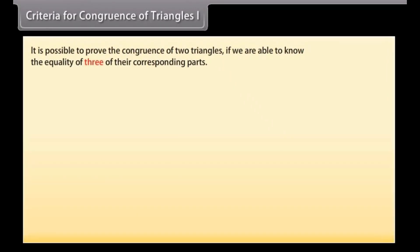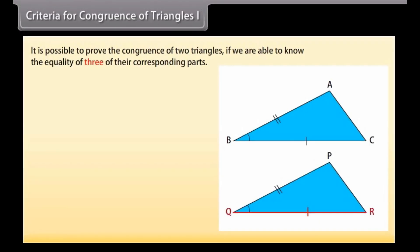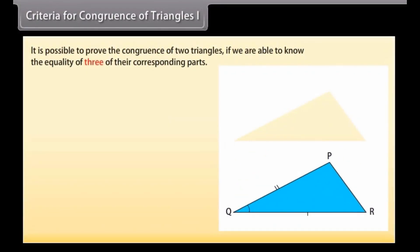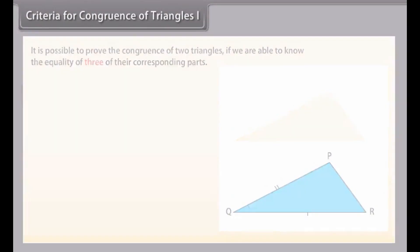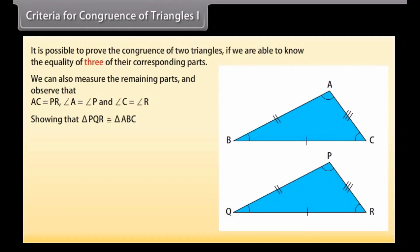We shall now learn that it is possible to prove the congruence of two triangles if we are able to know the equality of three of their corresponding parts. Consider triangle ABC. Construct another triangle PQR such that QR is equal to BC, angle Q is equal to angle B, and PQ is equal to AB. If we trace or cut out triangle ABC and place it over triangle PQR, we will observe that one covers the other exactly, and thus they are congruent. We can also measure the remaining parts and observe that AC is equal to PR, angle A is equal to angle P, and angle C is equal to angle R, showing that triangle PQR is congruent to triangle ABC. This means that equality of these three corresponding parts results in congruent triangles.